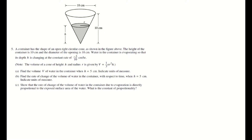Hello, today we are going to take a look at an AP free response question involving cones. A container has the shape of an open right circular cone, as shown above. The height of the container is 10 cm, and the diameter is 10 cm. Water in the container is evaporating so that its depth, h, is changing at a constant rate of negative 3 tenths centimeters per hour.